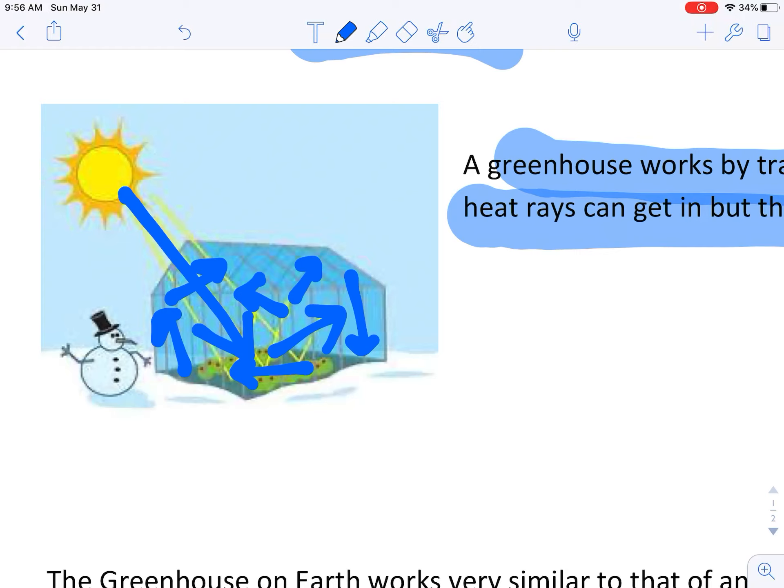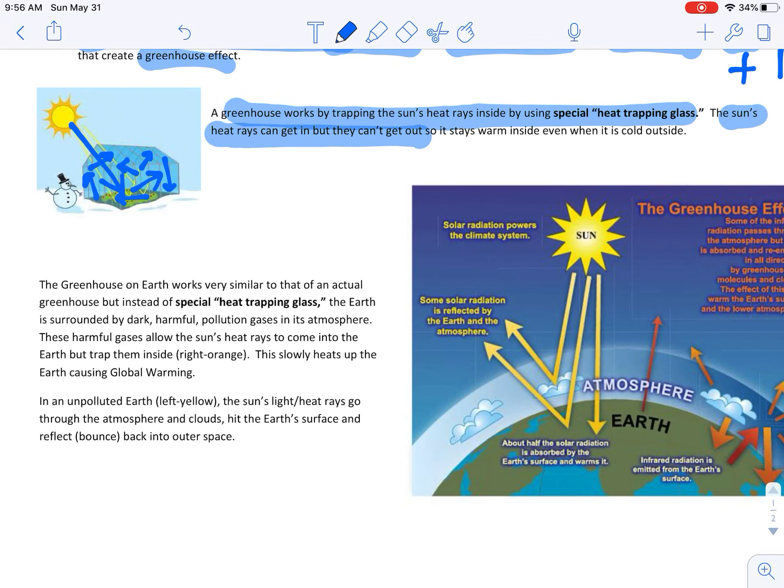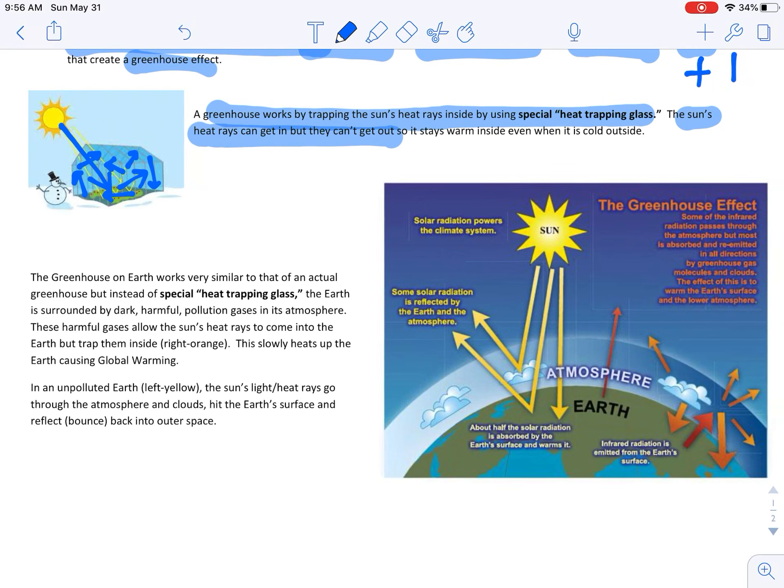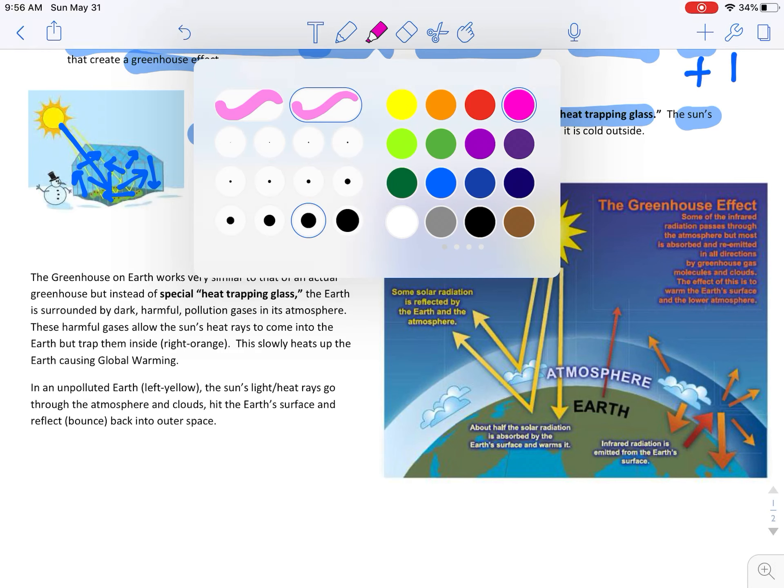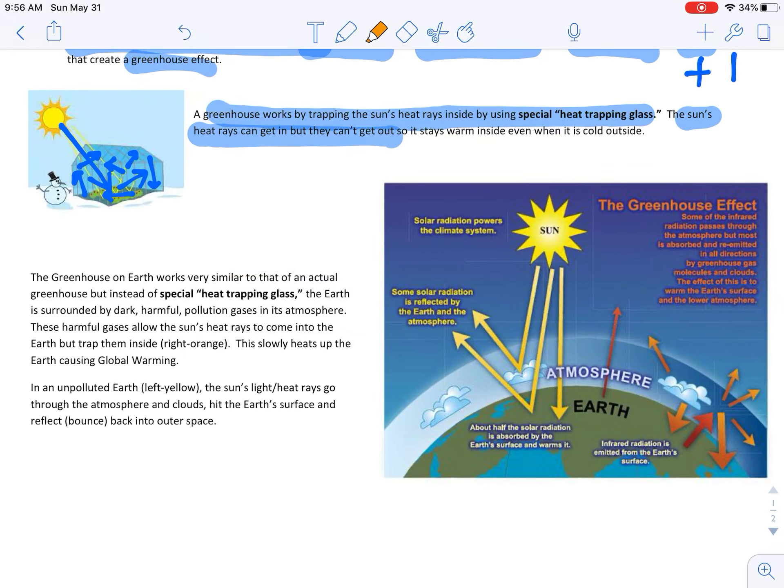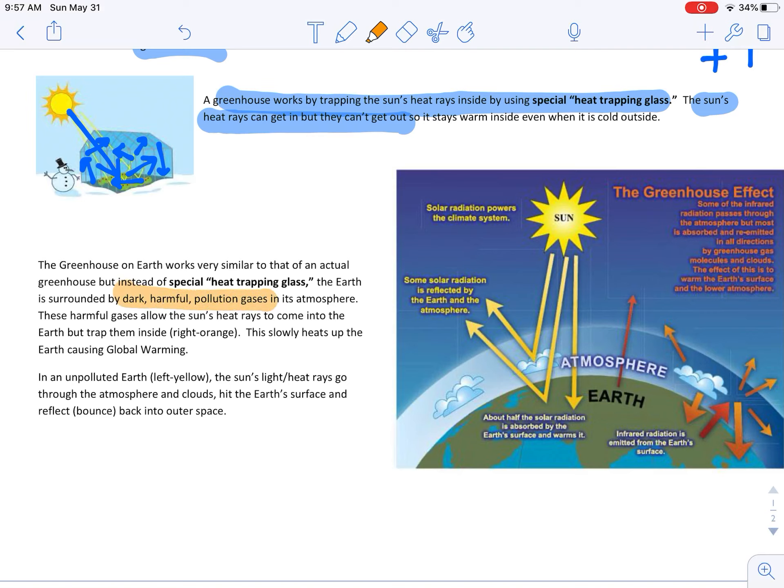Well, this is now occurring on the earth. The earth is working like a greenhouse. But the earth doesn't have glass, heat trapping glass all around it like a greenhouse does. Instead, the heat trapping glass is actually pollution. So how does this occur on earth? The greenhouse on earth works very similar to that of the actual greenhouse. But instead of heat trapping glass, the earth is surrounded by dark, harmful pollution gases in its atmosphere. These harmful gases allow the sun's rays to come into the earth, but they trap it. This slowly heats up the earth, causing global warming.